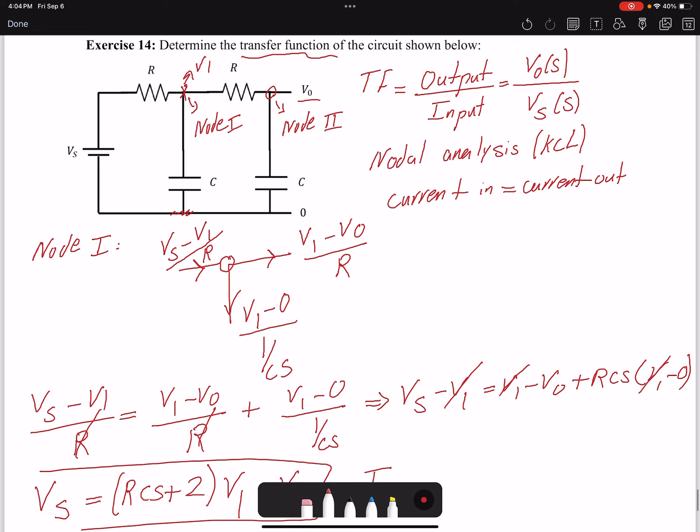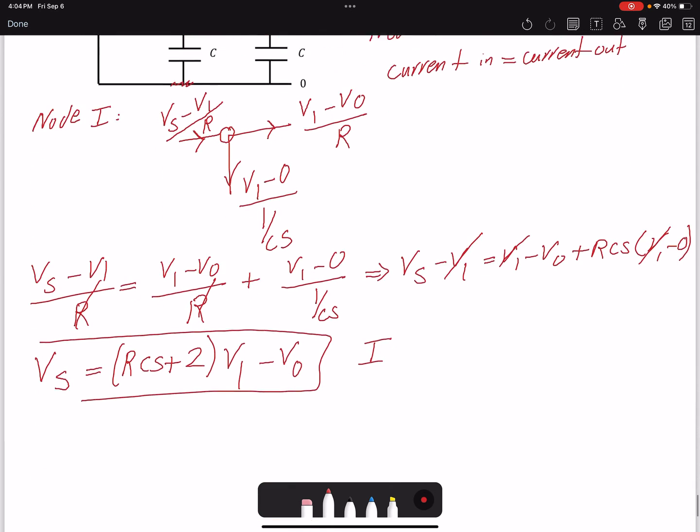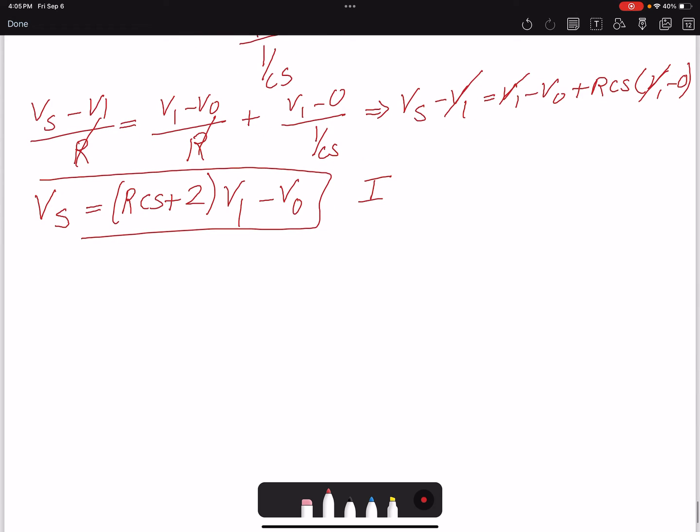For node 2, if I look at my node here, I have V1 minus V0 over R, and here I have...